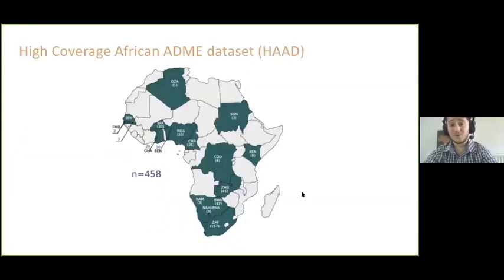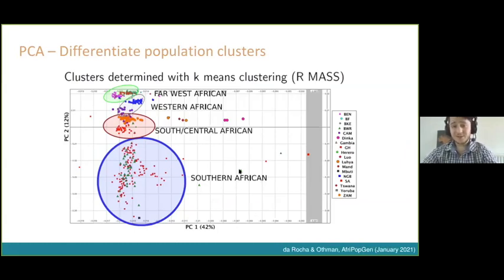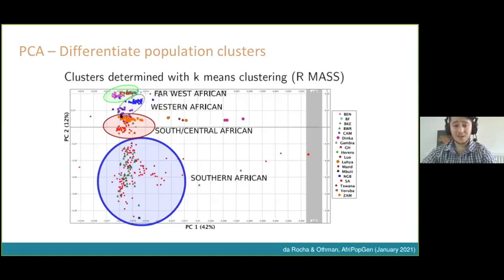What happens when you run a workflow like this on African data? We were also interested in how variants are distributed across the African continent. We did some PCA analysis to differentiate population clusters. We took 458 genomes, supplemented them with data from the 1000 Genomes Project and genotyping data, to generate a plot clustering which Africans are more related to one another — making broad regions: Far West African, Western African, Southern Central African, and Southern African. The clusters were determined algorithmically with K-means clustering.